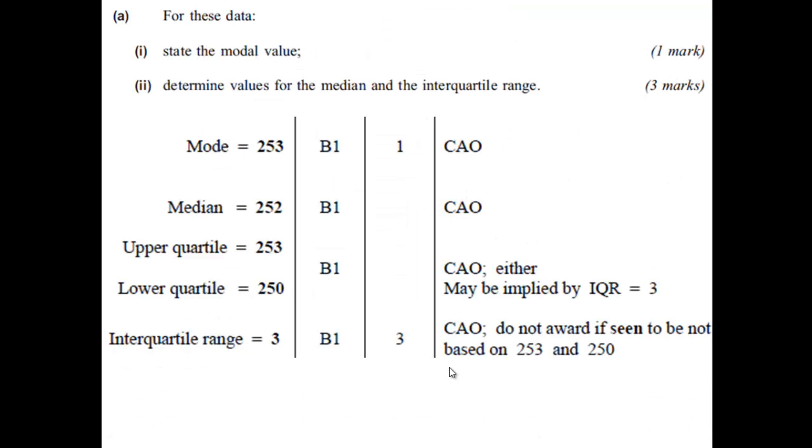So looking at the mark scheme, we can see it's all B marks. So you get a mark for getting the correct mode and the correct median. And the correct upper and lower quartile, you actually get a mark for either. So either of those being correct gets you that B mark. And then the correct interquartile range of 3 gets you the further B mark. It's not awarded if you'd seen that you've actually got it by making the wrong calculations.